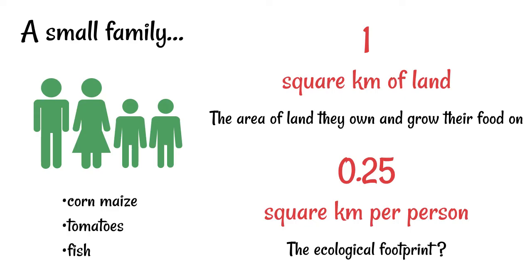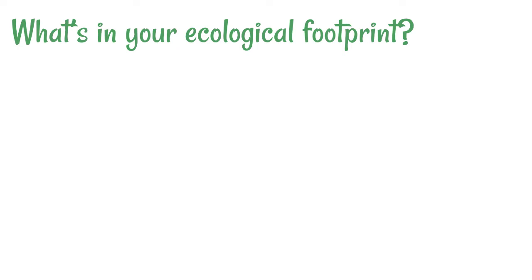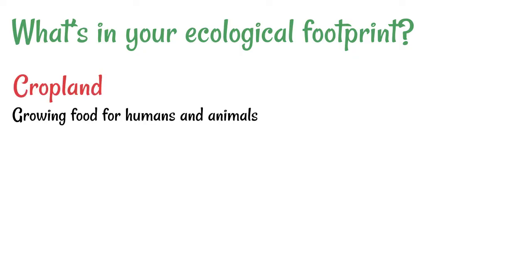So what exactly is required by an ecological footprint? Well first of all we've got cropland — that's the area of land for growing food for humans and animals.